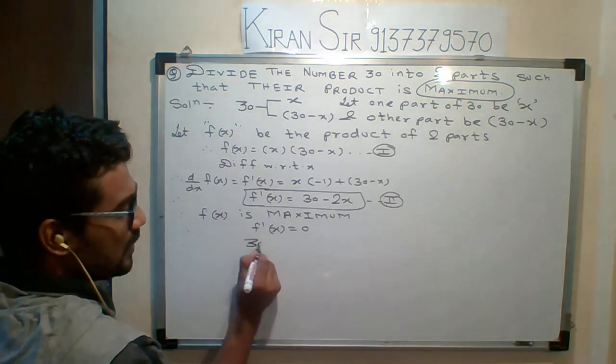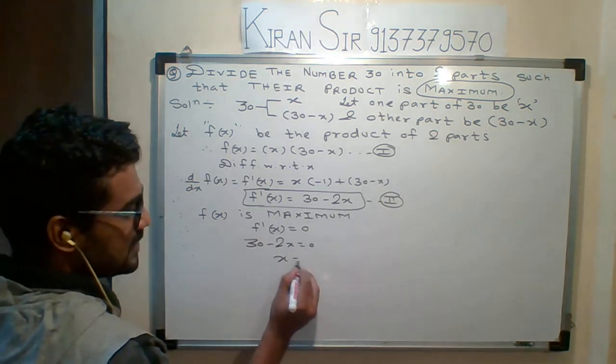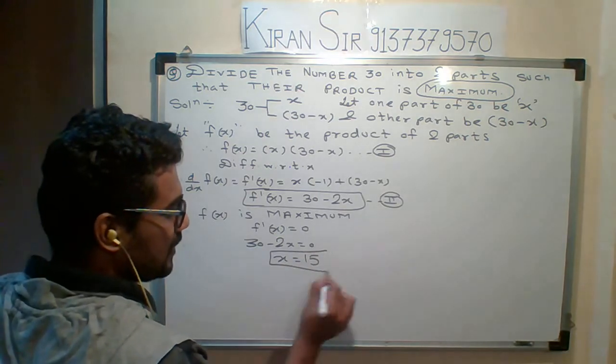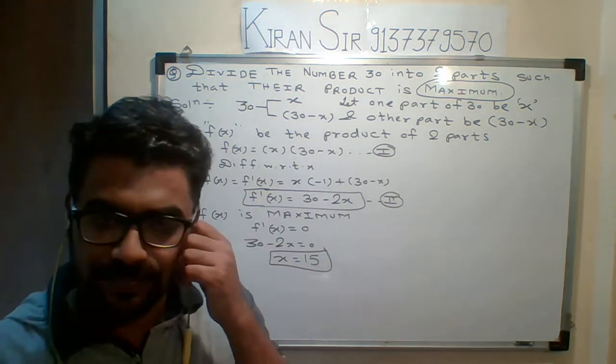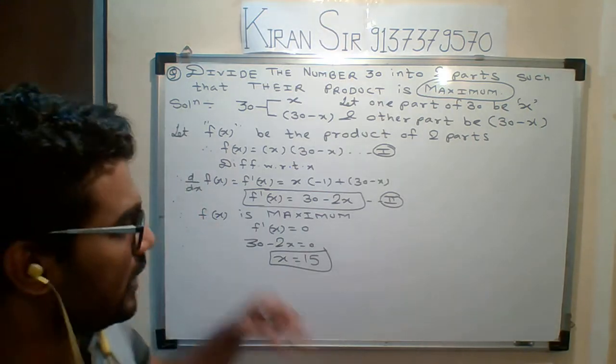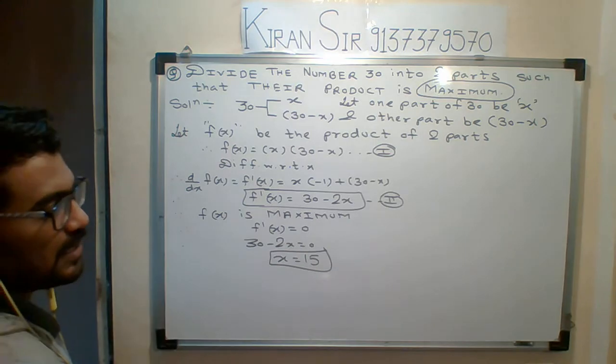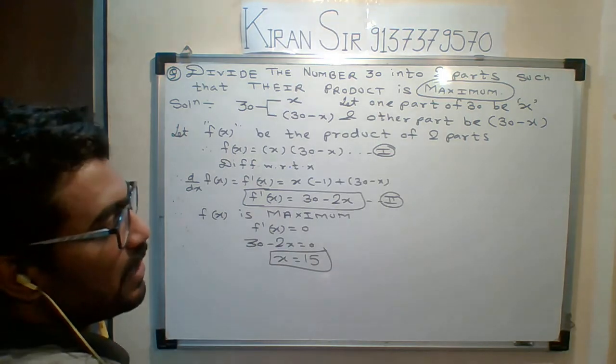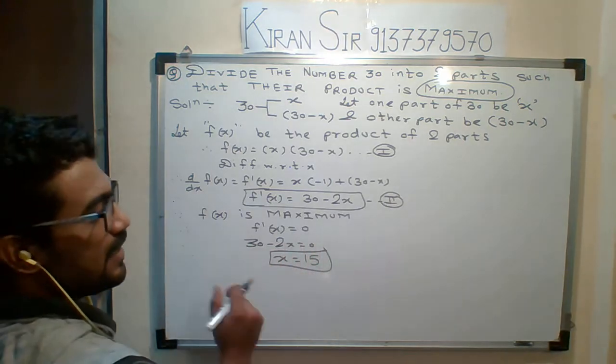What derivative we got here? 30 minus 2x. So 30 minus 2x equals 0, we get x equals 15. Now 15 is okay, so there is no compulsion that 15 and 15 will come, it can be 20 or 10 also depending on the given condition. x equals 15, and we have to decide whether it is maximum or not maximum, which is the first condition is common for maximum and minimum.